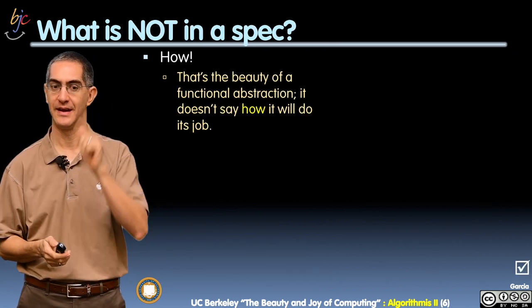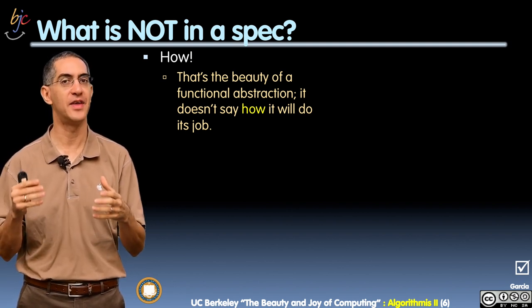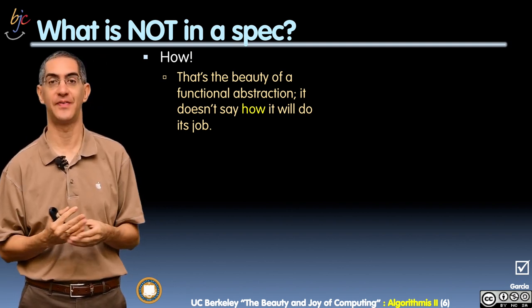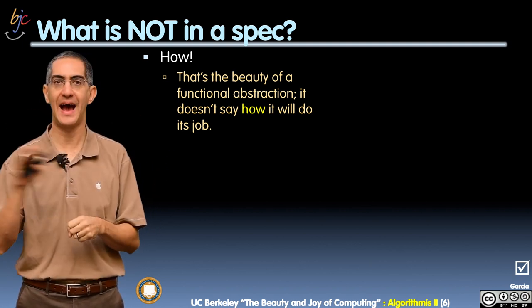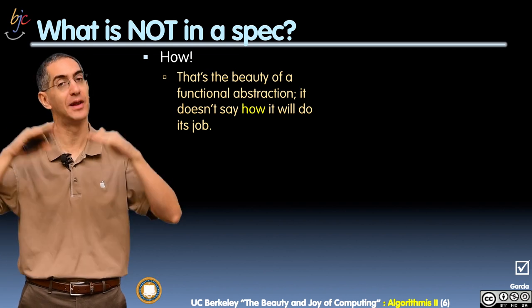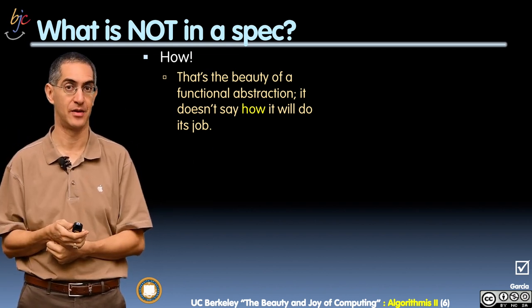And new material. Now, so what's not in a spec? What is not there? Well, the cool thing that's not there is how it gets done. The spec says what it does, but how is not part of that. How is below the abstraction line. This harkens back to our abstraction discussion we had last time.